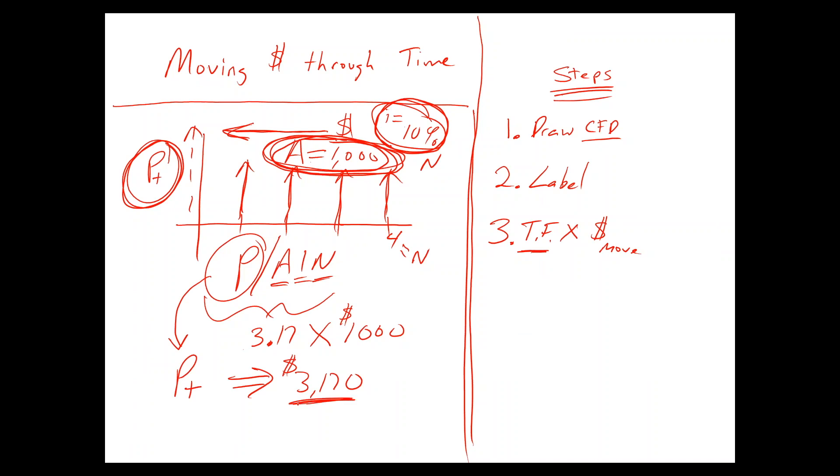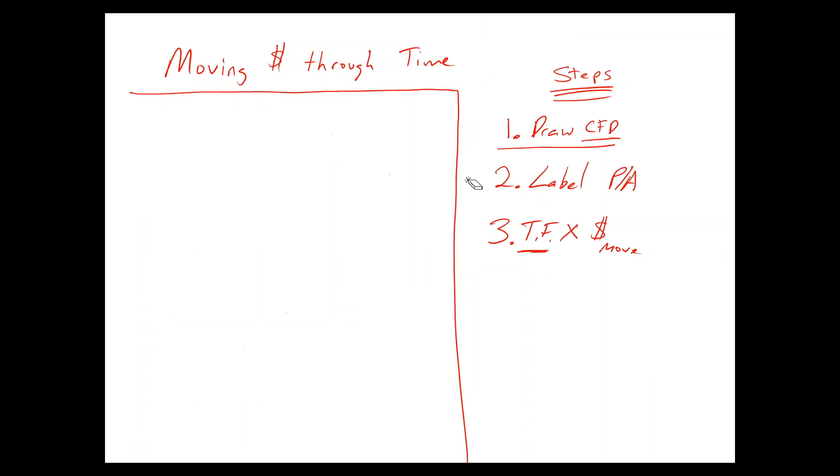And another way that this is useful is you can say, look, I know that if the P positive is $3,170, that I know I cannot spend more than $3,170. Otherwise, I'm going to have a negative NPV.